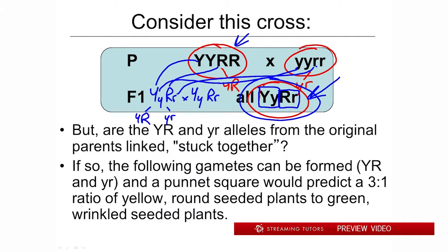Now, if that were the case — I'm not saying that it is, but if that were the case — only these gametes could be made: big Y, big R, and little y, little r. And if we do a Punnett square, we'll do it in just a second, it would predict a three-to-one ratio, just like we saw before, but in this case we're taking the two traits into account. In other words, three-fourths of the offspring would be yellow and round, and one-fourth would be green and wrinkled.